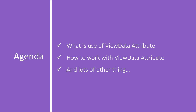Before learning about ViewData Attribute, let's focus on what is the difference between ViewData and ViewData Attribute. Both ViewData and ViewData Attribute are used to pass data from a controller action method to the View. We can also use this technique to pass data directly from a controller action method to the layout file. From a functionality point of view there is no difference between them, but there is a slight difference in their use.